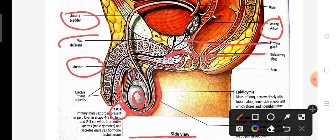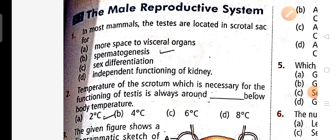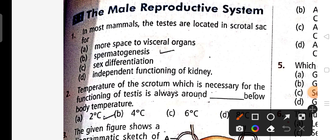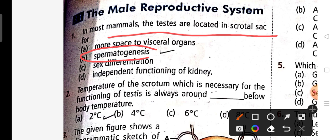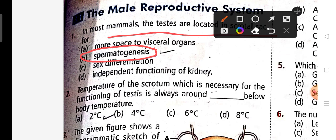Now let's do some male reproductive system MCQs. First MCQ: in most mammals, the testes are located in a scrotal sac for spermatogenesis — spermatogenesis is the process of sperm formation. Second question: the temperature of the scrotum necessary for the functioning of the testes is always around two to three degrees Celsius below body temperature.